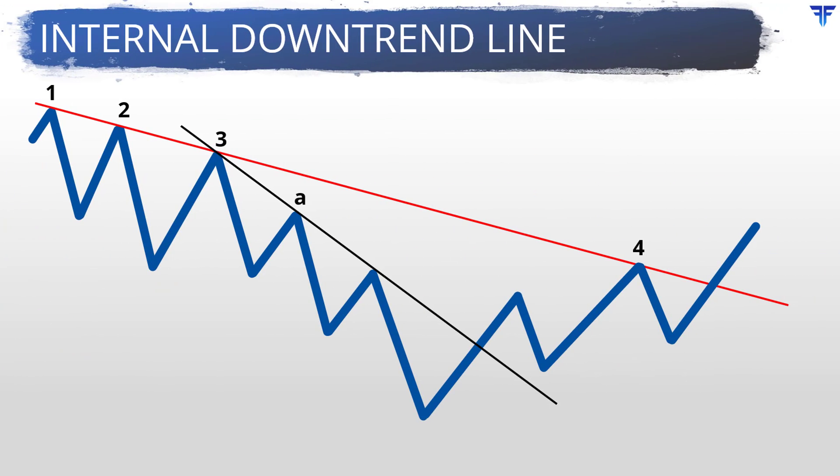In a similar fashion, one or more internal downtrend lines may need to be drawn within the main downtrend line to account for the acceleration of price decline following the construction of the main downtrend line. A break above the internal downtrend line indicates that the price is likely to return and test the main downtrend line. In this case, the red-colored trendline is the main downtrend line while the black-colored trendline is the internal trendline.